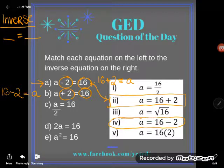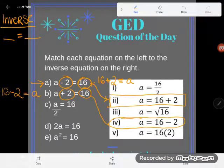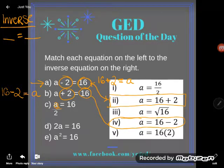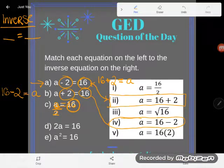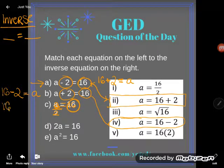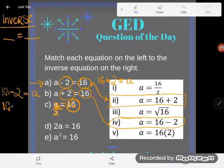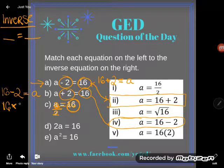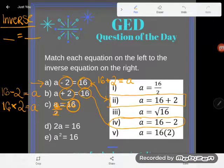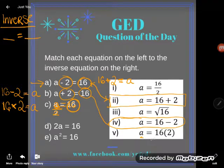Let's take a look at c. C says a divided by 2—remember, a fraction bar is just a fancy way of saying divided by—so a divided by 2 is equal to 16. If I wanted to do the opposite, I'd start with what used to be the answer, 16, and instead of dividing, do the opposite—I could multiply by 2. Even though it looks a little different, I can see 5 has that happening. It says to find a, multiply together 16 and 2. So c is paired with v, 5.